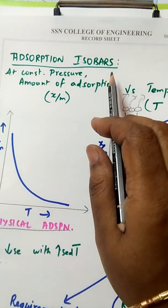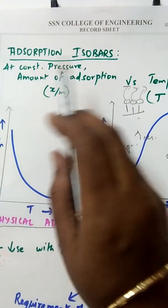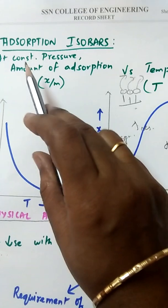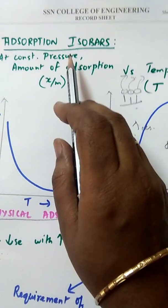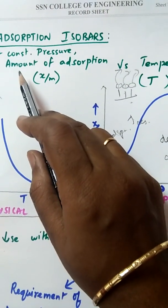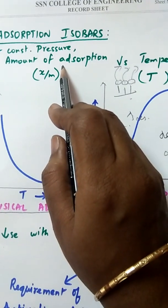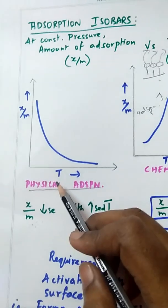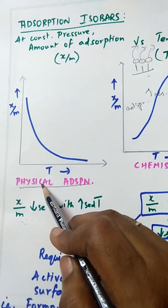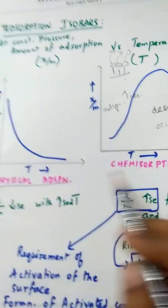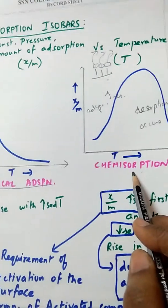Now, adsorption isobars — 'iso' means same, 'bar' means pressure. So isobars are studied at constant pressure. The graph is drawn between the amount of adsorption (x/m) versus temperature. This graph is drawn for both physical adsorption and chemical adsorption (chemisorption).